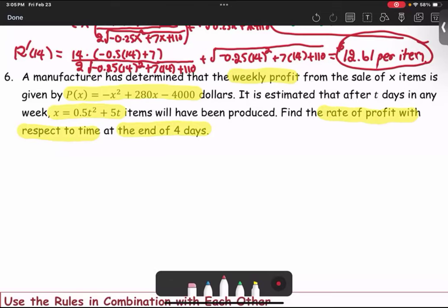The problem gives you P(X), which is the profit in terms of X. So we have profit in terms of X equals negative X squared plus 280X minus 4,000 dollars. And X, the number of items, depends on time T. X is a function of T: 0.5T squared plus 5T.